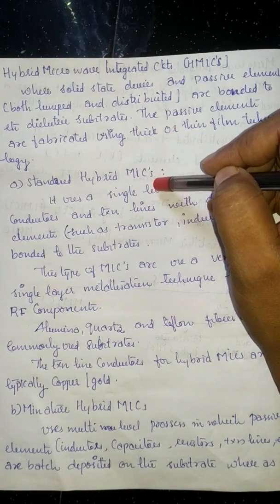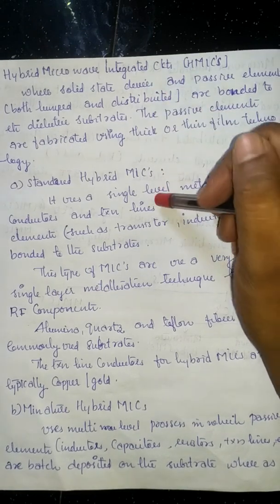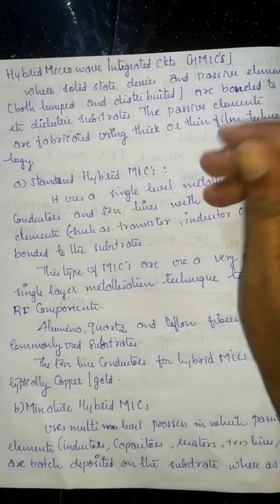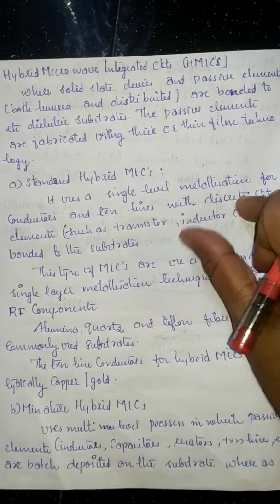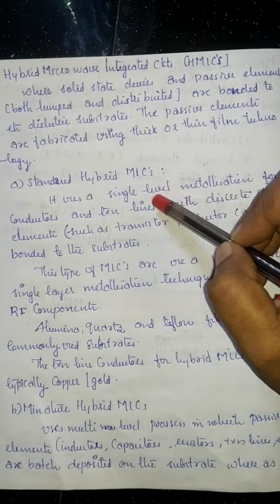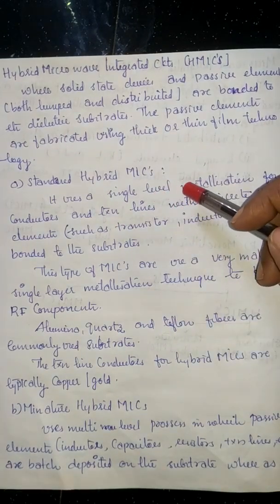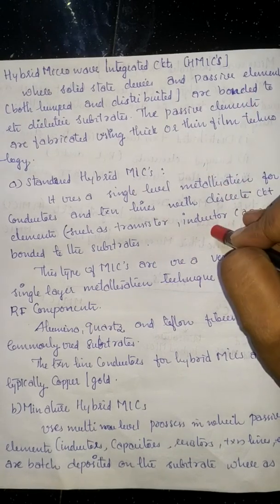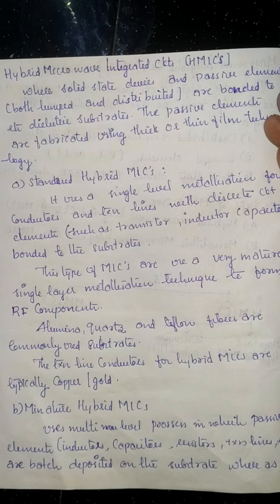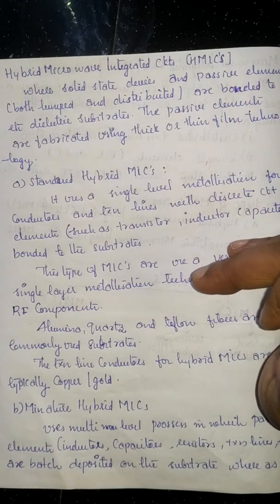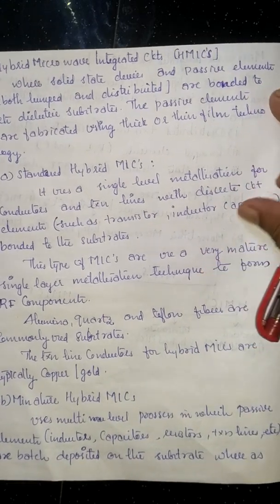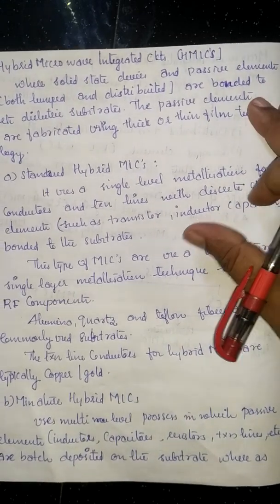Hybrid MICs are categorized into two types. The first is standard hybrid MICs. Within standard hybrid MICs, single layer metallization is used between conductors and transmission lines. This type of MIC uses a very mature single layer metallization technique to form RF components.